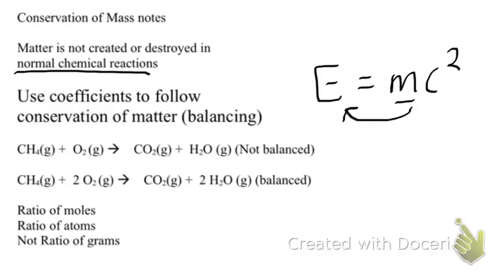In chemistry, in order to apply the law of conservation of mass or conservation of matter, we have to use coefficients to follow the conservation of matter by balancing otherwise unbalanced chemical equations, like the one you see here — an unbalanced chemical equation.